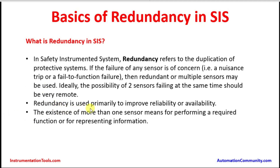Redundancy is used primarily to improve reliability or availability. Either to improve the reliability or availability, redundancy is being used. This is selected based on the SIL calculations in the safety applications. The existence of one or more sensors means for performing a required function or for representing information — representing information comes into picture in the case of a control loop, where there may be multiple transmitters to do the measurement and provide information.